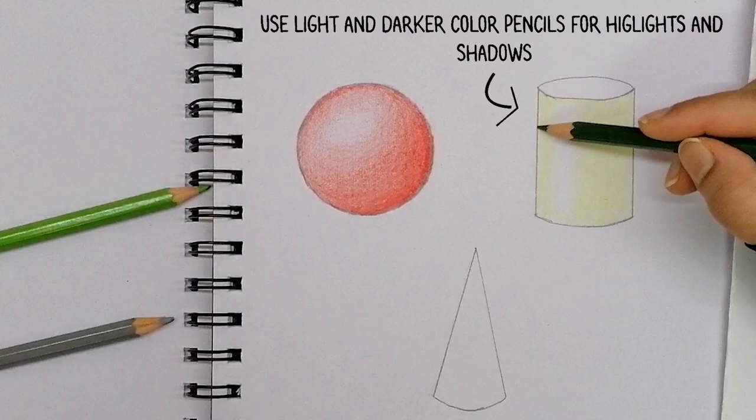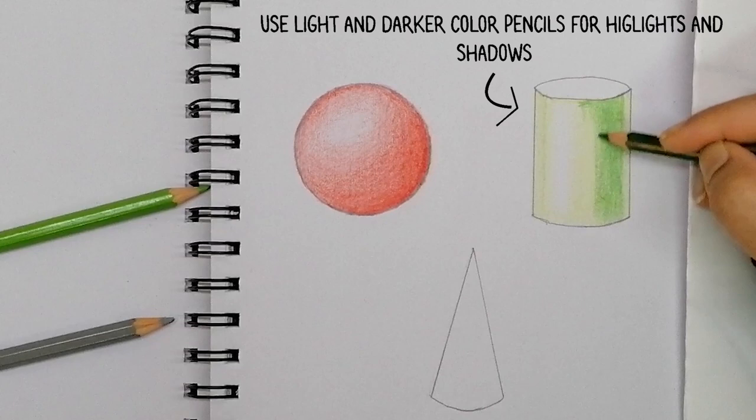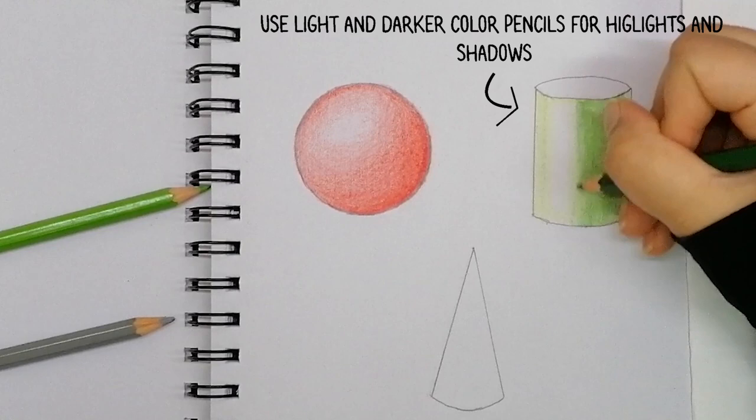I'm going to start again with lighter shade, leaving the area for highlight. Start experimenting with darker tone pencils and then blend them together. Use a paper beneath your hand to avoid smudges on the paper.